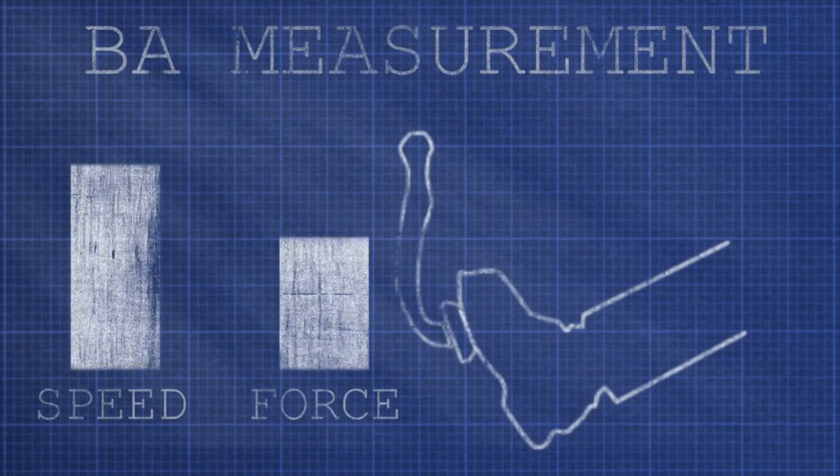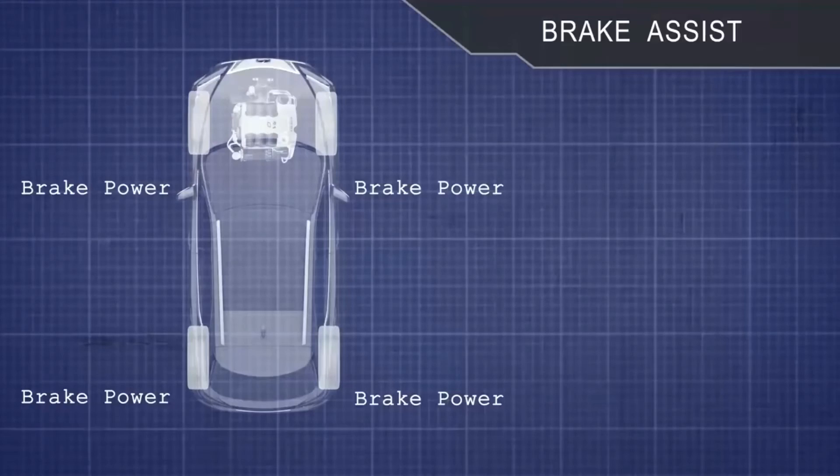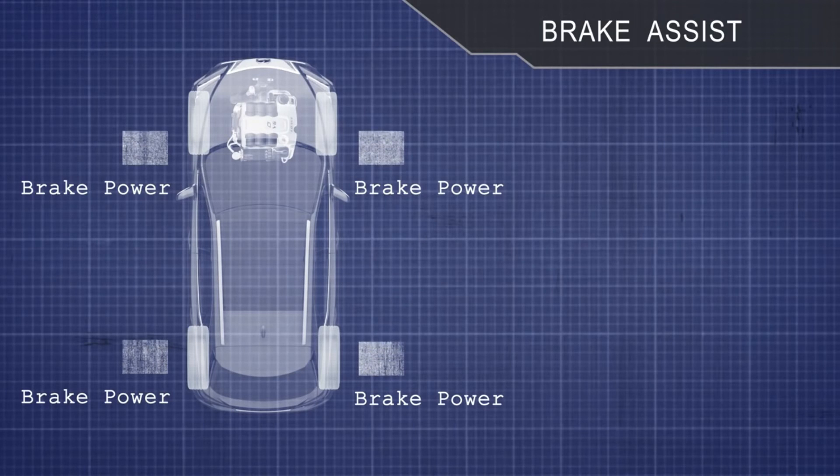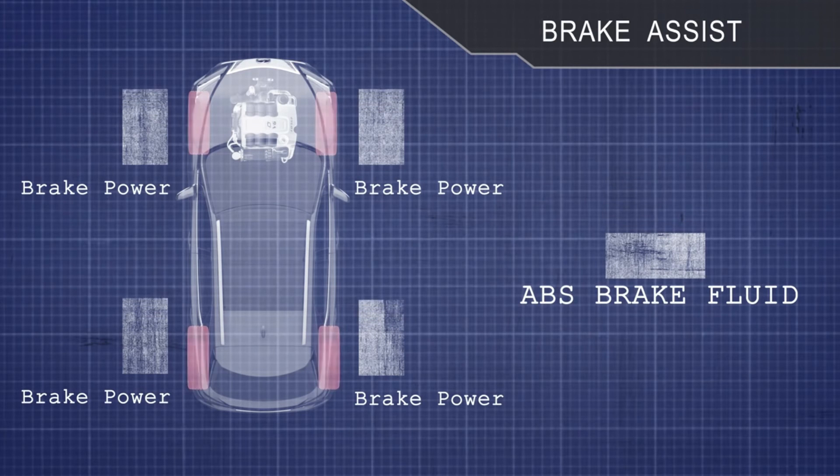Brake Assist measures the speed and force the brake pedal is applied to determine whether the driver is attempting a sudden stop. If the system determines that's the case, BA uses high-pressure brake fluid stored in the ABS system to apply additional braking power to all four wheels.